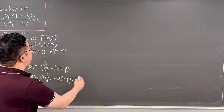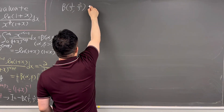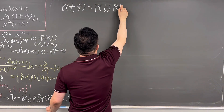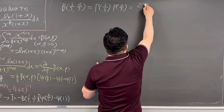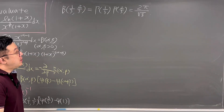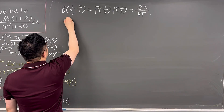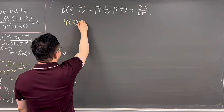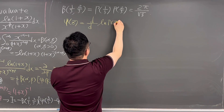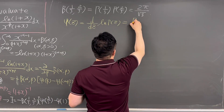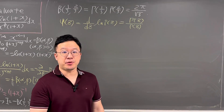B(1/3, 2/3) equals Γ(1/3) · Γ(2/3), which evaluates to 2π/√3. The digamma function ψ(z) is the derivative of ln Γ(z) with respect to z, i.e., ψ(z) = Γ′(z)/Γ(z). We'll use two tools: the recurrence relation and the reflection formula.